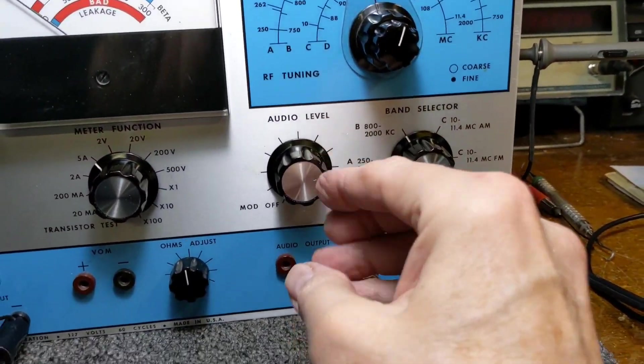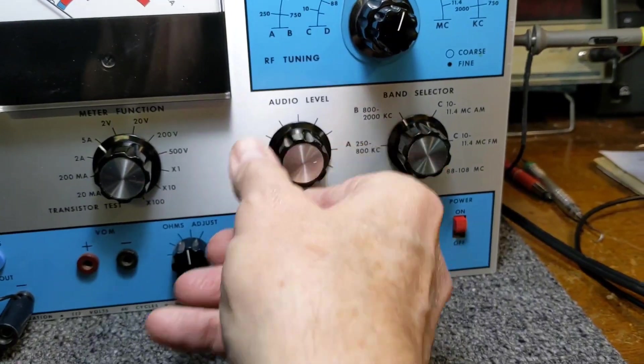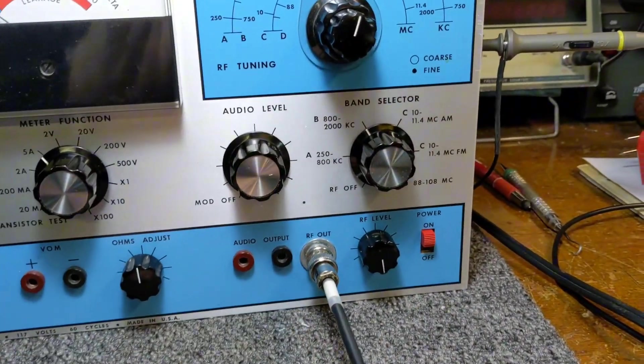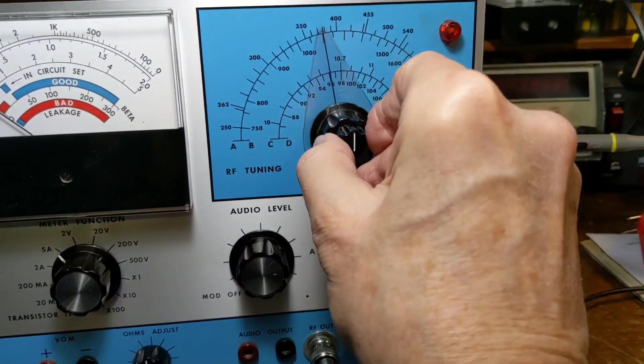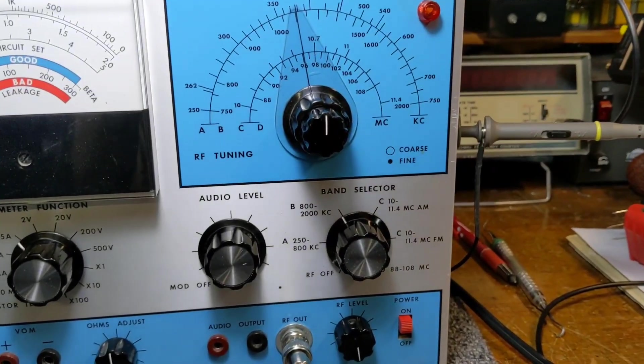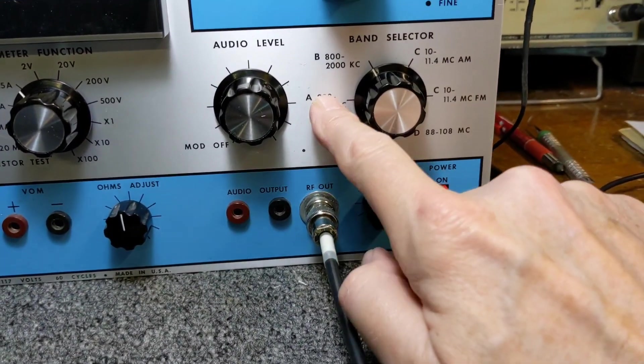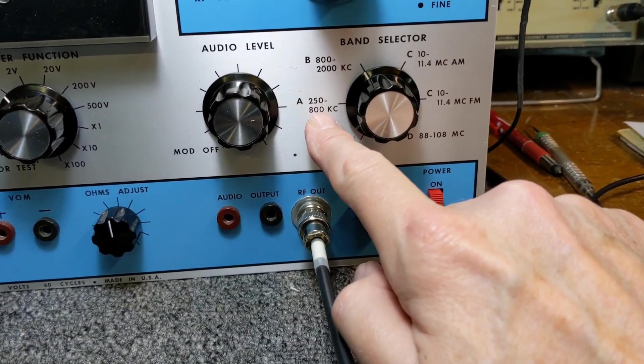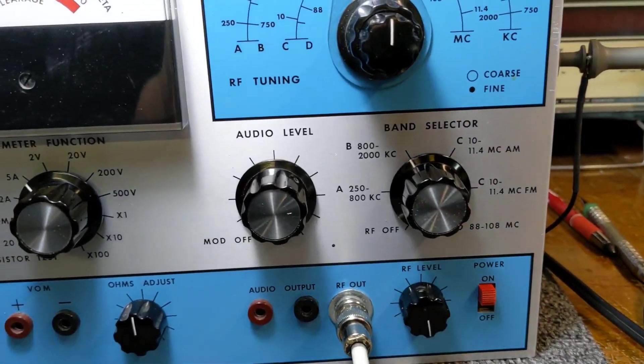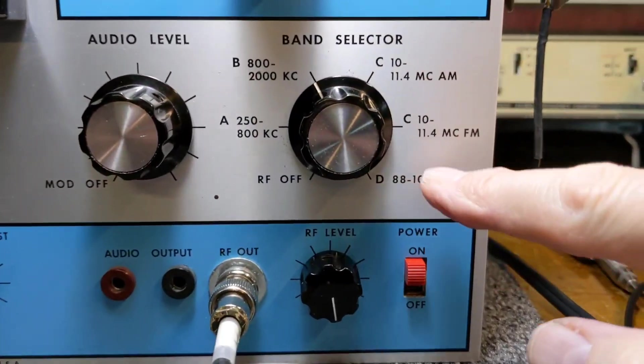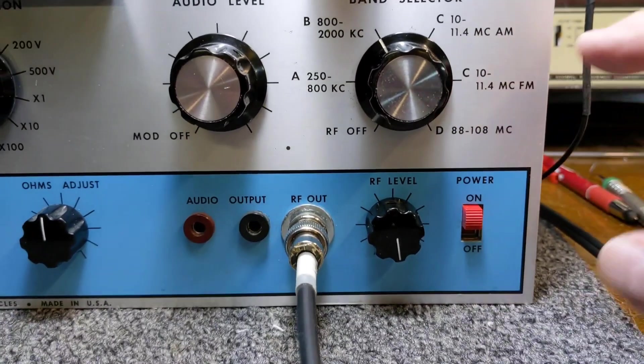This side, you have an audio level. It puts out I think it's 400 hertz tone. 400 or a thousand. I think it's 400. I'm not quite sure. And up here you have your RF. There's a course and then there's a fine. So, and again, it goes, you can shut this off. You can have it either in the 250 to 800, 800 to 2000. It's designed to work on transistor radios. And it does very well. I've been using it for a long time. You've got 10 to 11.4 on FM, and you also have an 88 to 108. So it's perfect for that.